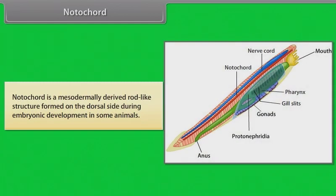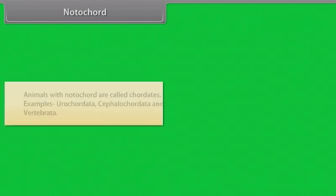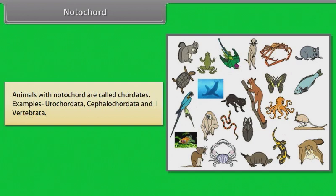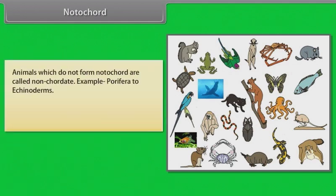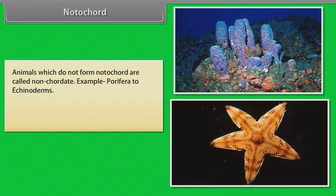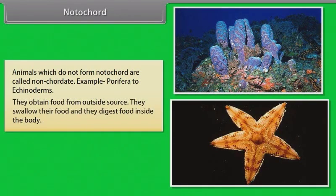Notochord: Notochord is a mesodermally derived rod-like structure formed on the dorsal side during embryonic development in some animals. Animals with notochord are called chordates. Example: Urochordata, Cephalochordata and Vertebrata. Animals which do not form notochord are called non-chordates. Example: Porifera to Echinoderms. They obtain food from outside sources, swallow their food and digest it inside the body.